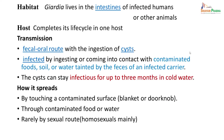The habitat is the intestine of infected humans or other animals, and Giardia completes its life cycle in one host. Transmission is through the fecal-oral route by ingestion of cysts from contaminated food, soil, or water tainted by feces of an infected carrier. Cysts can remain infectious for up to 3 months in cold water. Spread can also occur via contaminated surfaces, door knobs, or rarely by sexual route, mainly in homosexuals.